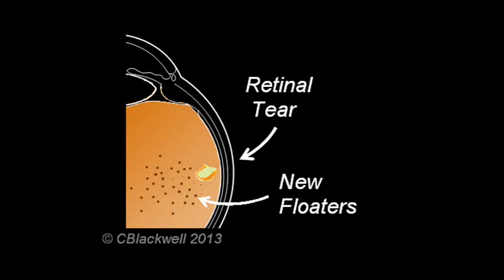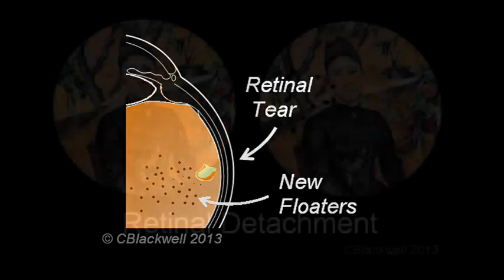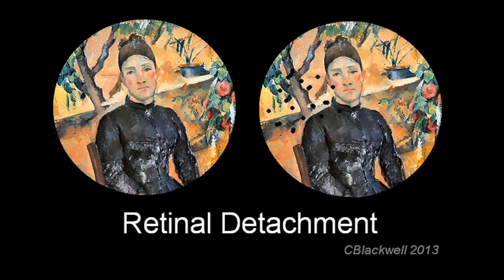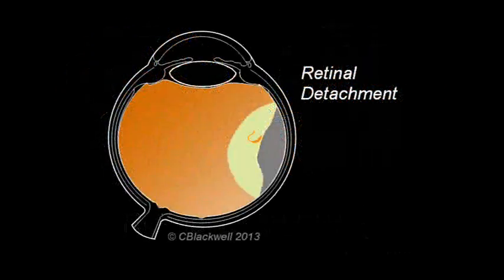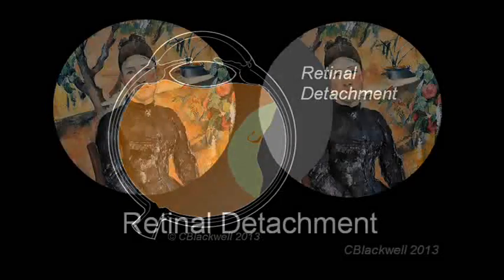When a retinal tear occurs, it often releases pigment or blood into the vitreous that you see as sudden appearance of new floaters. If a detachment occurs, then that part of your vision goes missing.